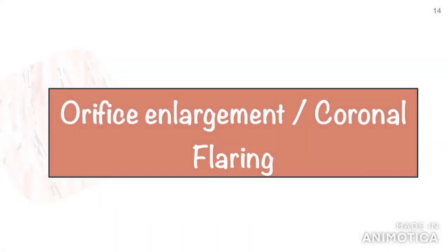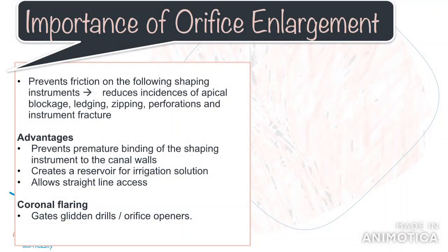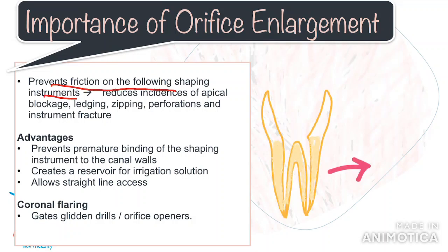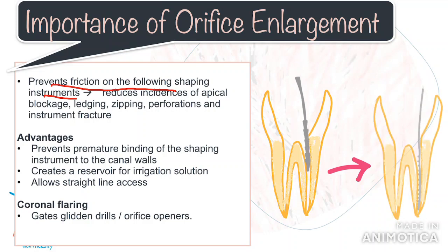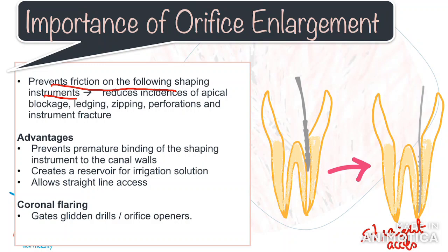Finally, we come to the last step of access cavity preparation: orifice enlargement or coronal flaring. Before determining the working length of the tooth, we should first proceed with coronal flaring. This step is essential as it prevents stress or friction on the following shaping instruments, which reduces the risk of instrument fracture. The canal orifice is the gateway to the apical third — if the orifice in the coronal third is enlarged correctly, you can expect better apical cleaning and shaping of the canal. It also reduces incidences of apical blockage, ledging, zipping, perforations and other endodontic mishaps.